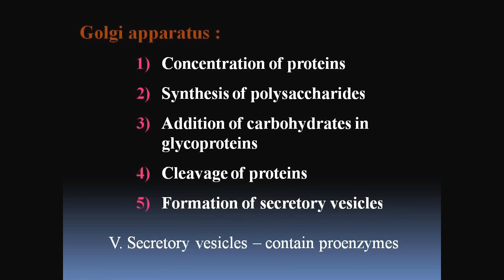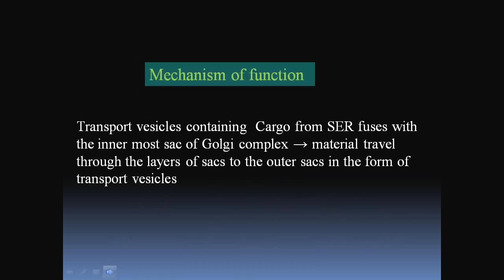The secretory vesicles formed from the Golgi apparatus contain proenzymes. Regarding the mechanism of function, transport vesicles containing cargo from the smooth endoplasmic reticulum fuse with the innermost sac of the Golgi complex. The material then travels through the layers of the sac to the outer sacs in the form of transport vesicles.